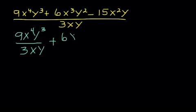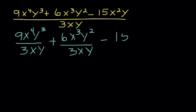So I'm going to write 6x cubed y squared divided by 3xy, then one more, keep the sign, minus sign, and rewrite 15x squared y over 3xy.